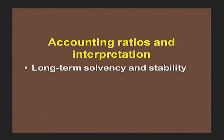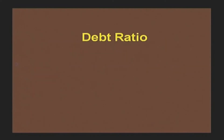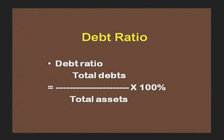Long-term solvency and stability factors will be considered. Debt ratio is the first ratio showing the long-term solvency position. We will learn its computation. Then we will learn about gearing ratio. Debt ratio is computed as: Total Debts / Total Assets × 100.